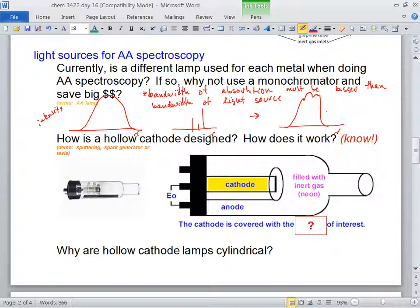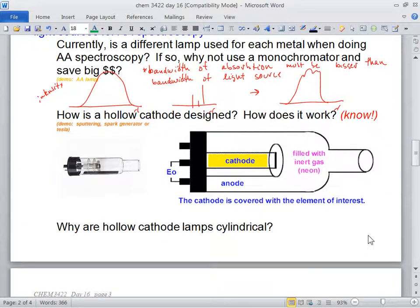Here's an AA lamp. It's all wrapped up because if you drop it, glass could go places. Here's a hollow cathode lamp. We said that we have a different lamp for every metal. The cathode is covered with the metal of interest. If we want to look for calcium, the cathode is going to have calcium metal on there. Mercury, it'll have mercury metal. Why is it cylindrical? Well, let's answer this question first: how does it generate this light in the first place?